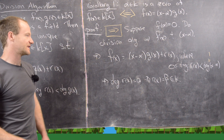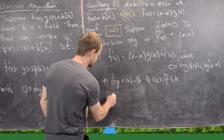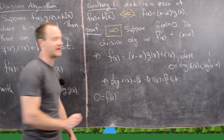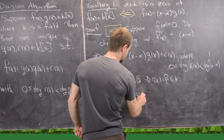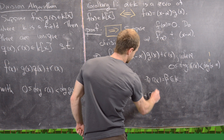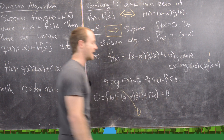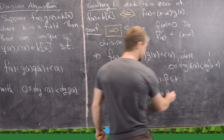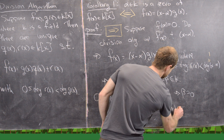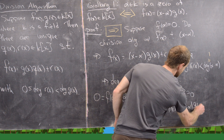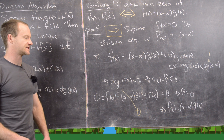Now we evaluate f at α. We know f(α) = 0, and substituting gives (α − α)·g(α) + r(α) = 0·g(α) + β = β. So β = 0, which means f(x) = (x − α)·g(x), i.e., (x − α) divides f(x). That completes the forward direction.